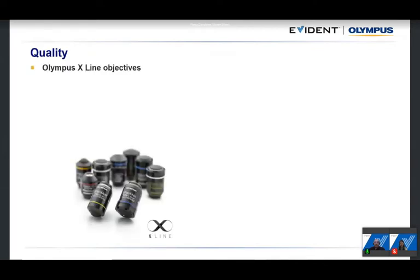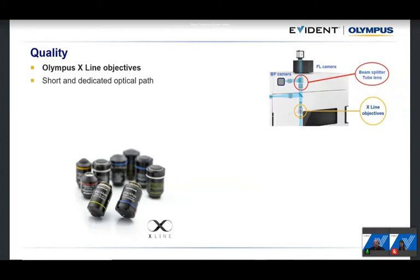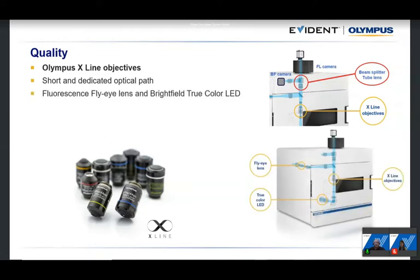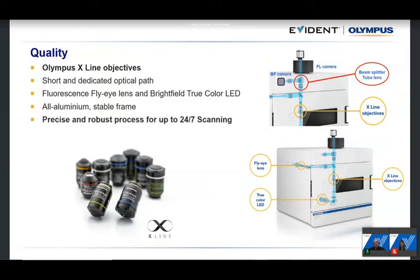Speaking of quality: the VS200 is based on our best Olympus six-line objectives, providing great corrections and image quality. We created a very short optical path between the objective and the camera to ensure the highest possible image quality. We also use fly-eye lenses and a true-color LED that doesn't distort staining colors, especially in brightfield. An all-aluminium stable frame makes the system robust and precise, capable of scanning 24 hours a day, seven days a week without stopping.